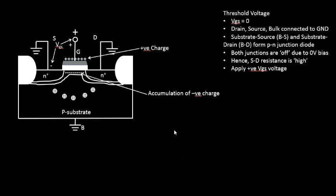In the last lecture we saw the formation of the depletion region, due to the accumulation of positive charges, which is in turn due to the positive potential applied on the gate terminal. We applied a positive gate potential VGS on one of the plates of the parallel plate capacitor, and this positive potential repelled all the majority carriers — holes — in the P-type substrate, leaving behind negative charges in the channel region.